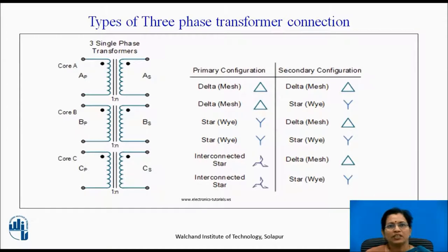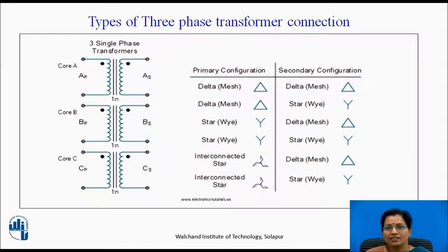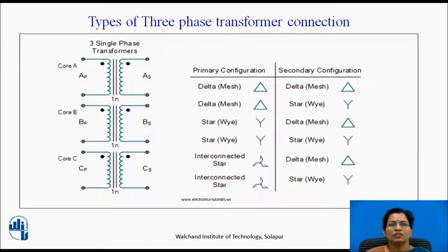There are types of three-phase transformer connections. When we say the three-phase winding is there, we have to connect that three-phase winding in two manners: star or delta. According to that, there are a number of types of connections — delta-delta connection, delta-star connection, star-delta connection, star-star connection, interconnected star or delta connection, or interconnected star or star connection. The primary winding is connected in delta and secondary winding is connected in delta, and so on. We are going to discuss about these connections in detail.